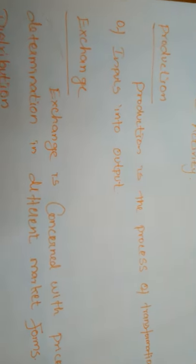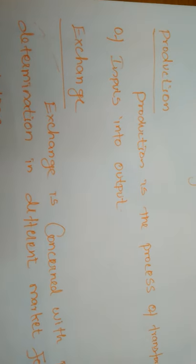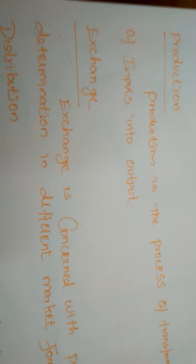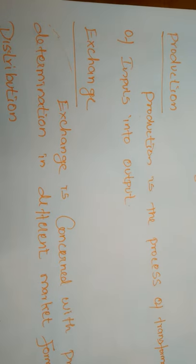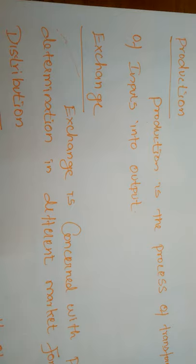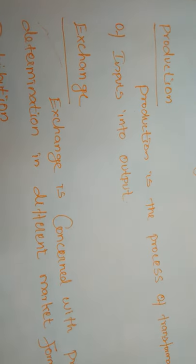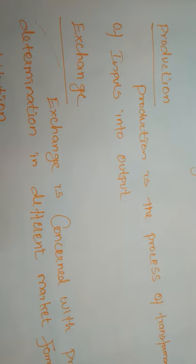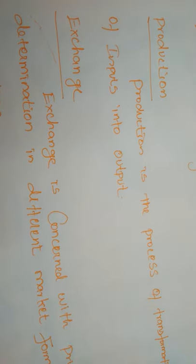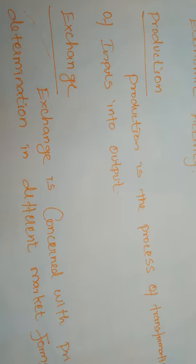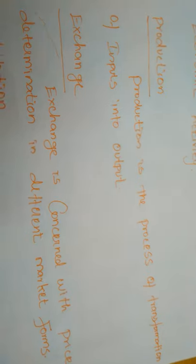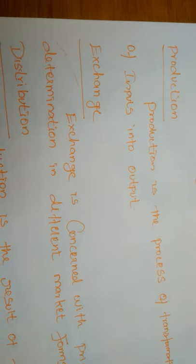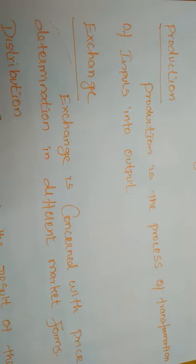Next is production. Production is the process of transformation of inputs into outputs. The producer must know how to make a finished product by using inputs or raw materials. For example, to produce finished furniture, we must have the raw materials and know how to convert those raw materials into the finished product. When an entrepreneur knows how to make a finished product from raw materials, this process is called production.